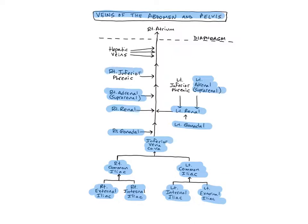The right inferior phrenic vein originates on the lower surface of the diaphragm and empties directly into the inferior vena cava. It drains the lower surface of the diaphragm and adjoining peritoneal tissues. The left inferior phrenic vein also begins on the lower surface of the diaphragm and, like the other veins of the left abdominal region, empties into the left renal vein. It drains the same regions: the lower surface of the diaphragm and adjoining peritoneal tissues.